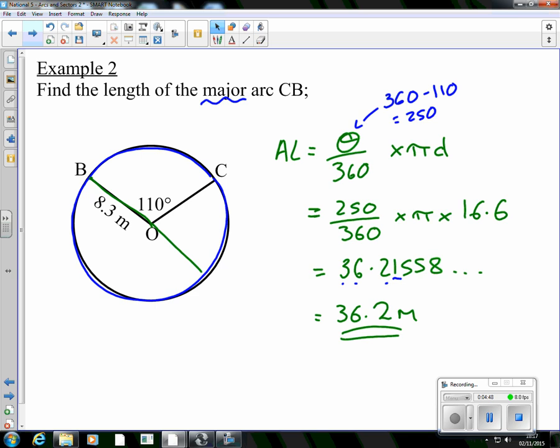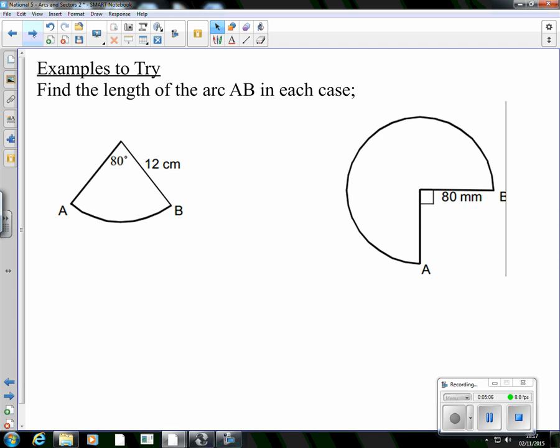Very similar to last time, similar idea. You just have to make sure if you're finding the arc length, you're using part of the circumference, so it'll be pi d. And if you find the sector area, it's pi r squared. Be sure of the difference. You'll get the practice for that in class.